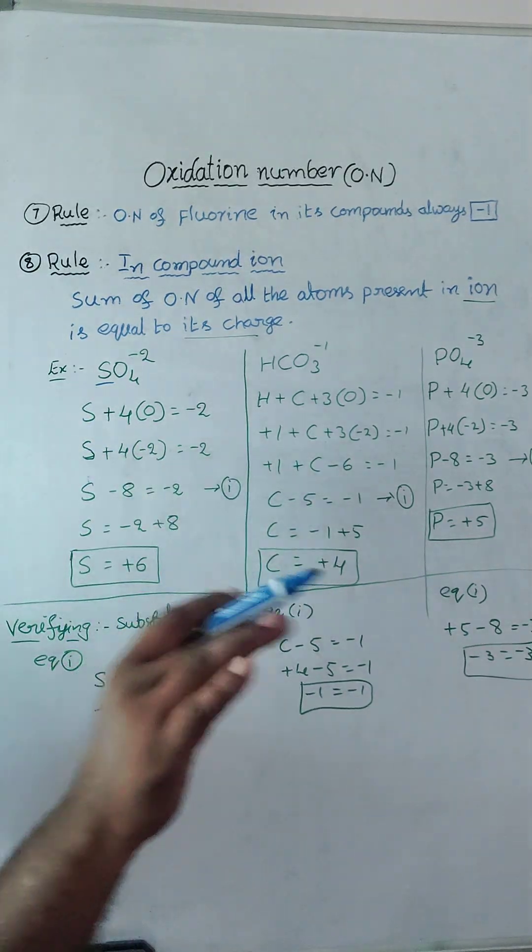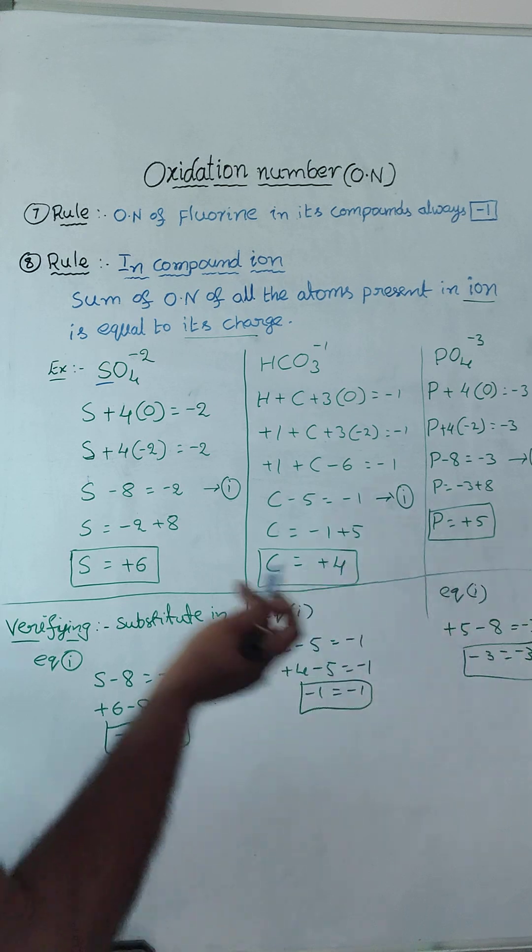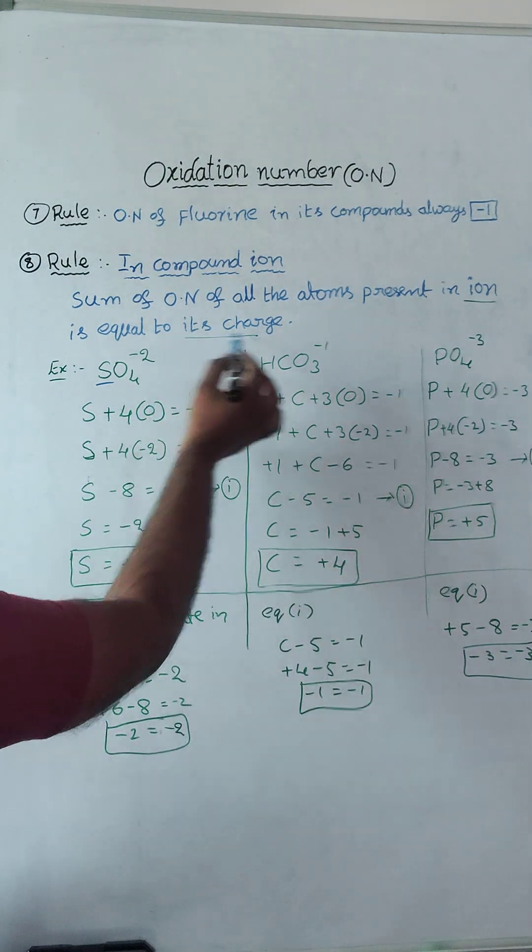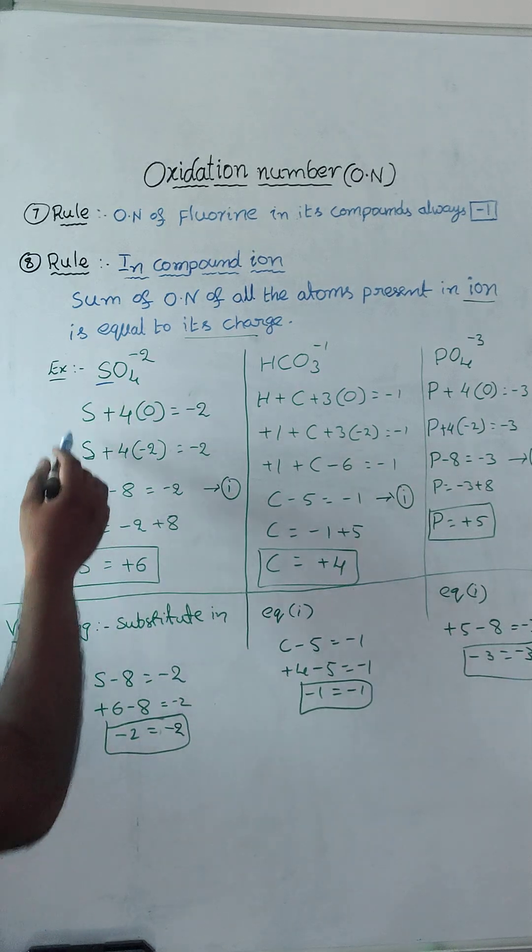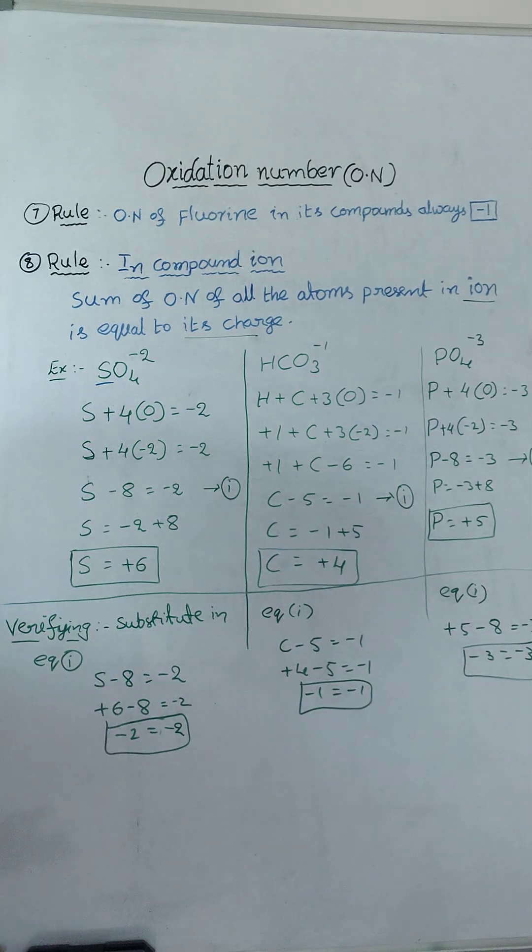But what? As per first rule, is equal to 0 we taken. Here is equal to its charge. So sulphate ion charge how much? Minus 2. Remaining calculation same as for first rule.